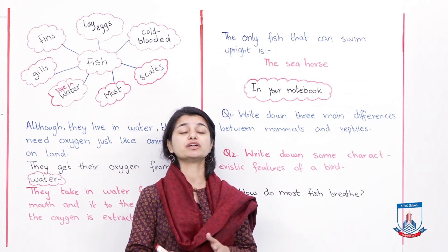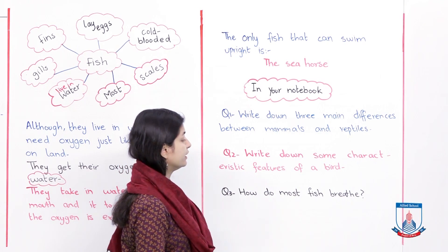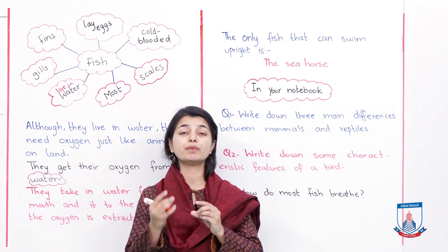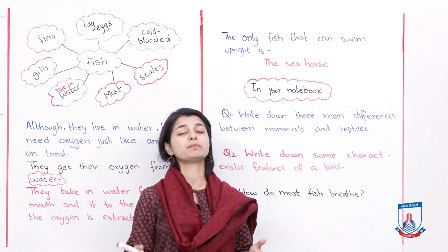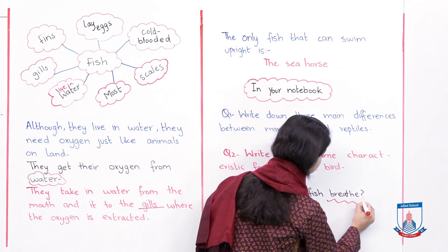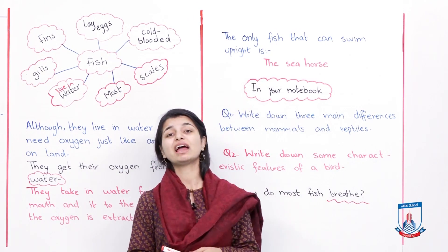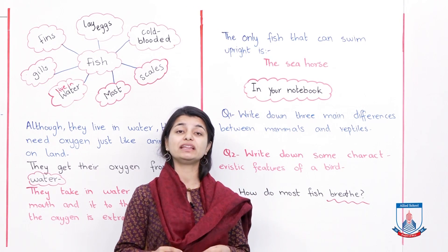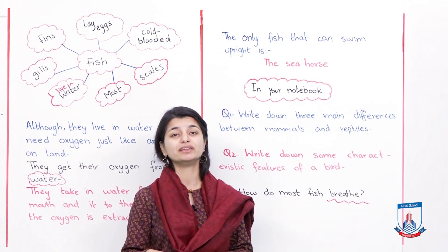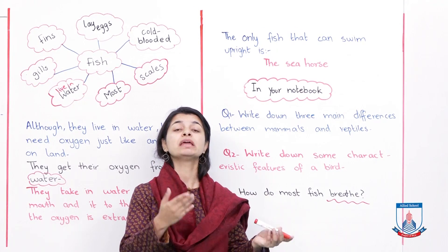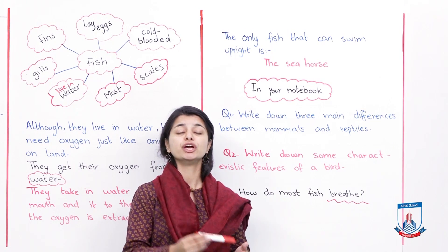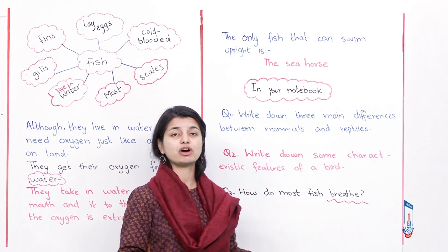Question three: how do most fish breathe? Fish breathe through their gills. They take water in through their mouth, and when it passes through the gills, the gills extract the oxygen from the water and give it to the fish. You can answer this in two or three lines. There is nothing difficult about this unit.